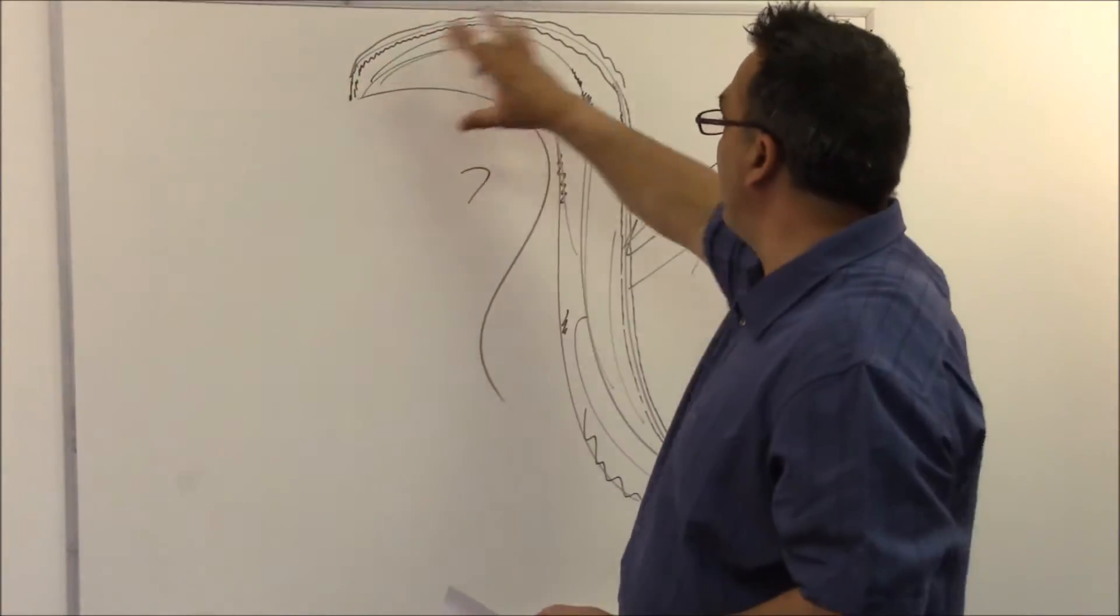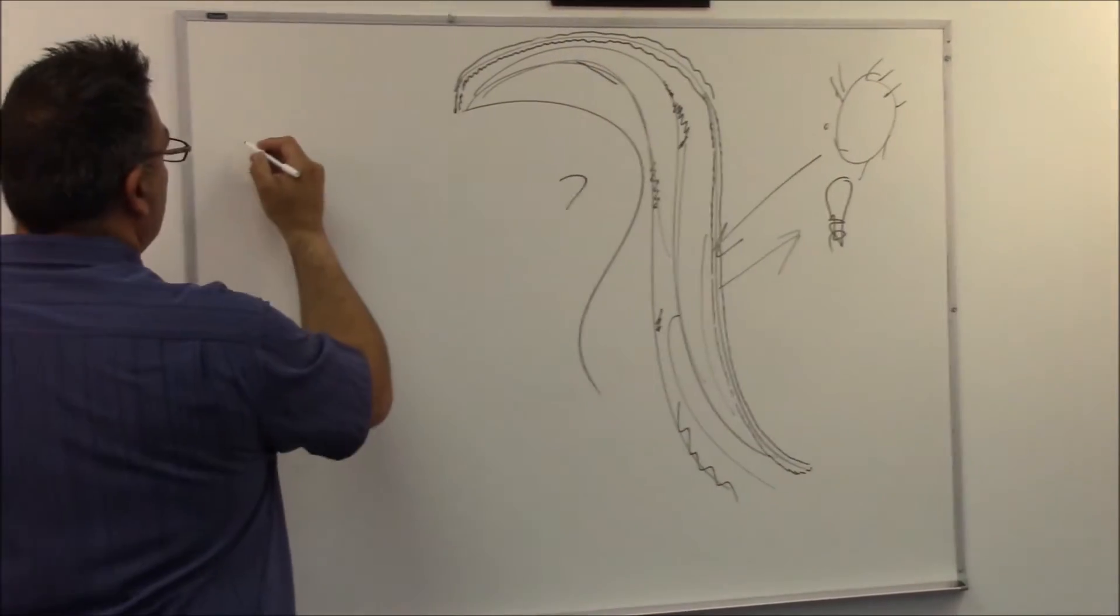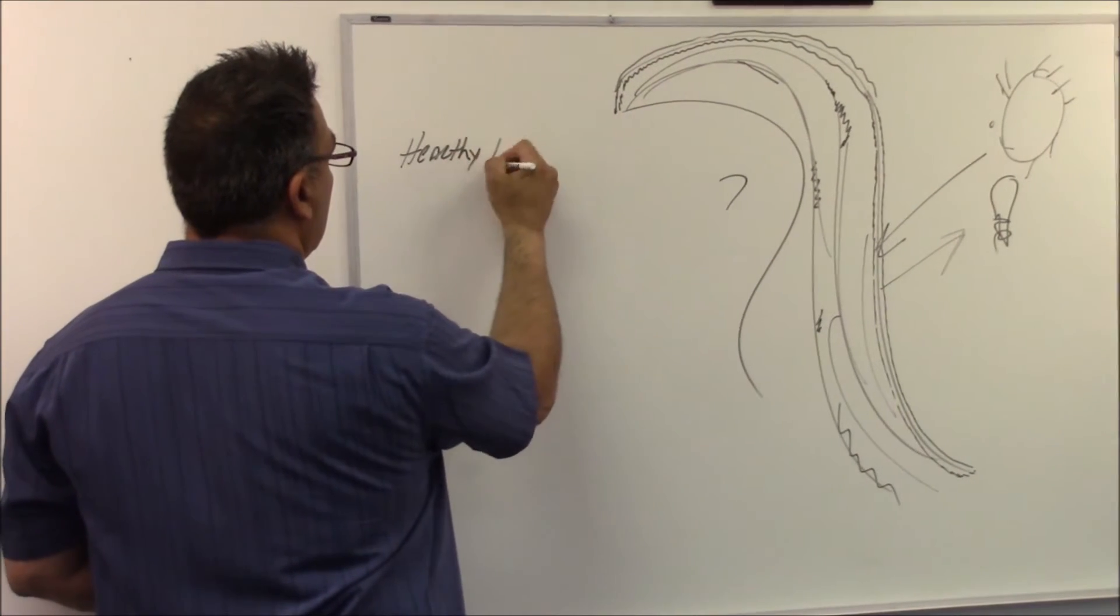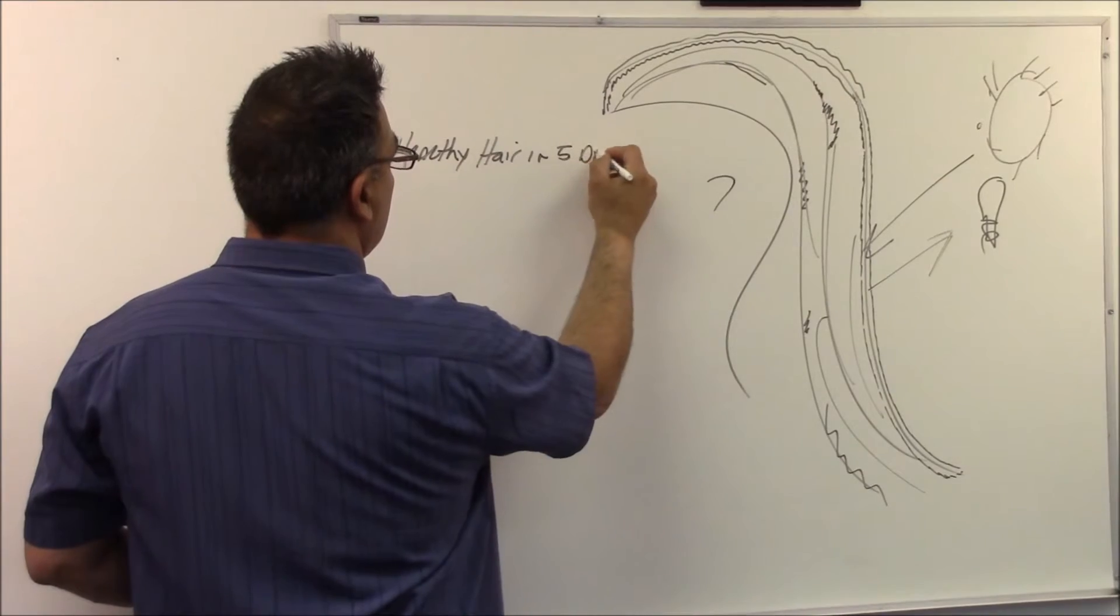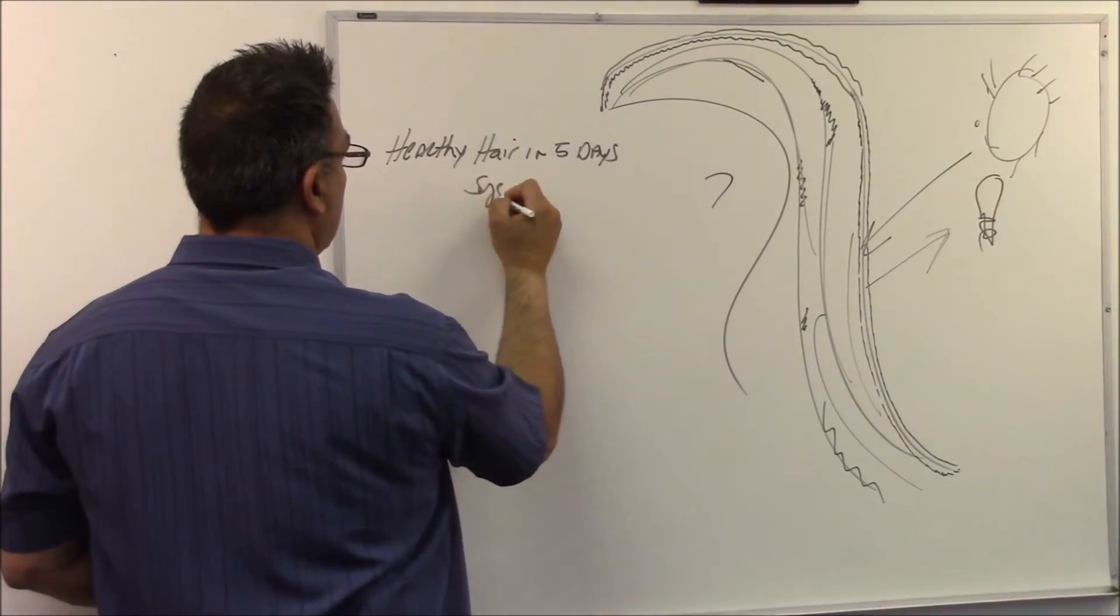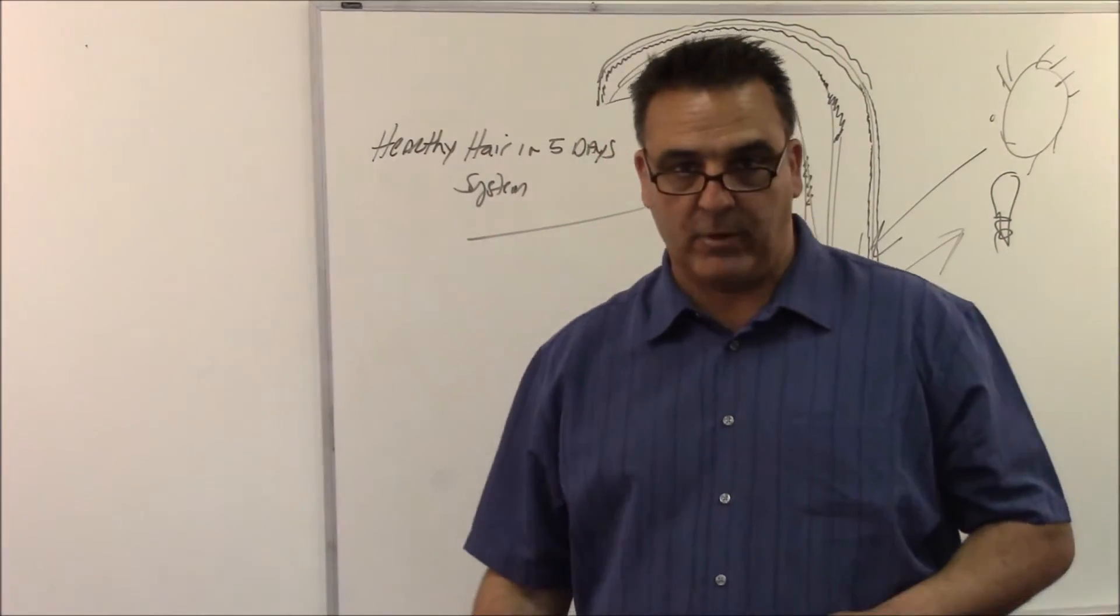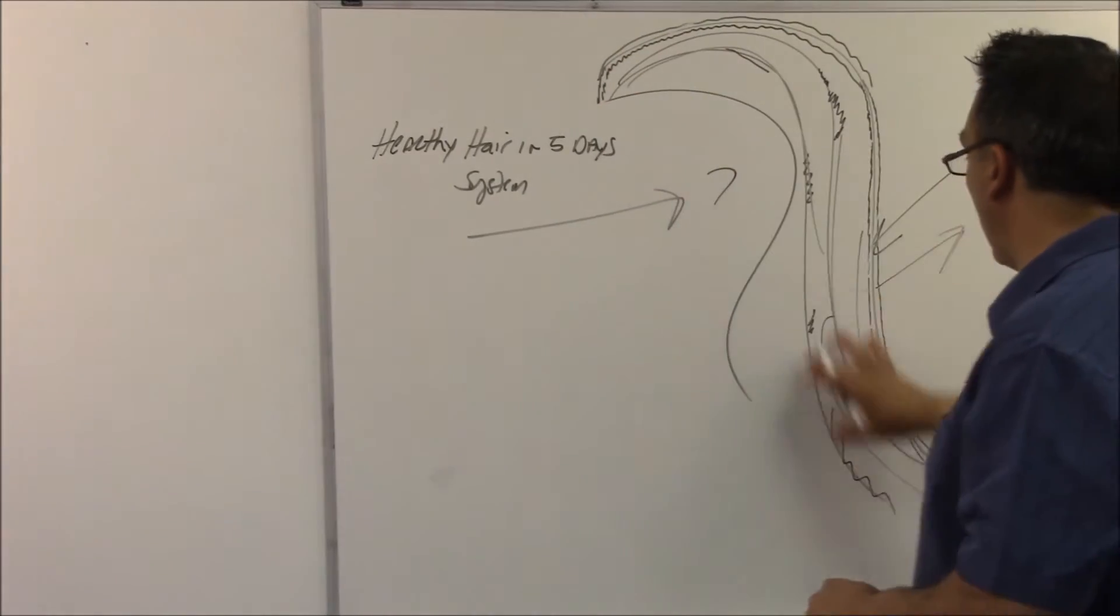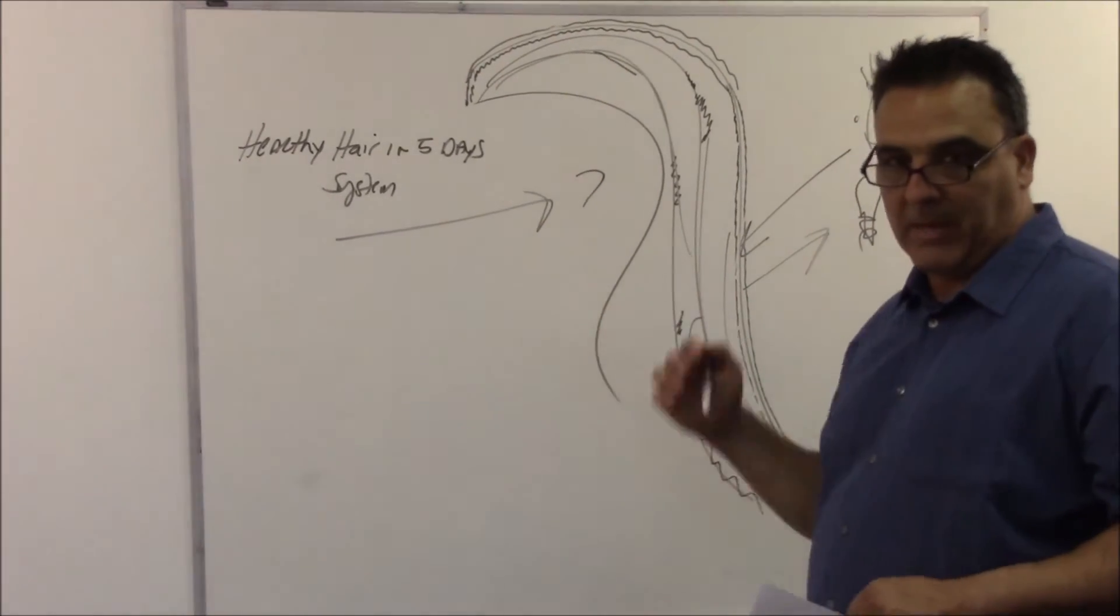The key here is to remove this. Now, how do you do it, very simply. I know that the healthy hair, and this is why I've done this, in five-day system, used here will remove every bit of film and residue that you have on your hair completely within five days. Within five days, you will have a normal, free of all film and residue hair shaft ready to be colored.